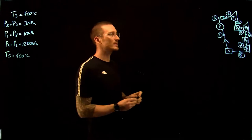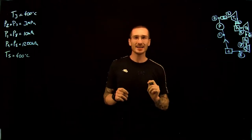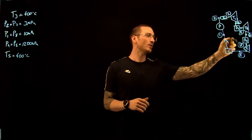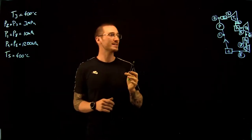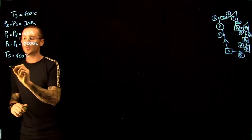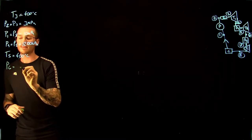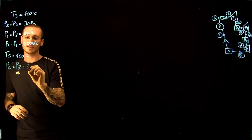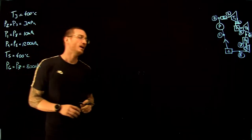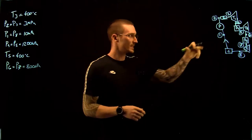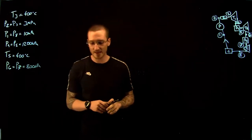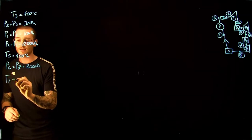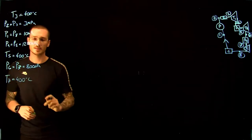The second reheat process occurs at 800 kPa, meaning the pressure at state 6 equals the pressure at state 7 through our third boiler: P6 = P7 = 800 kPa. This second reheat process also brings the temperature back up to 400°C, so T7 = 400°C.